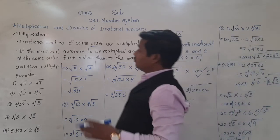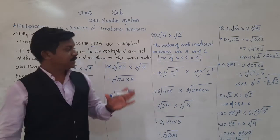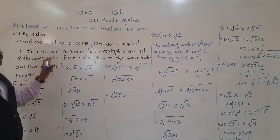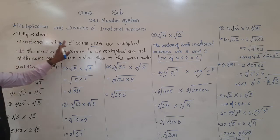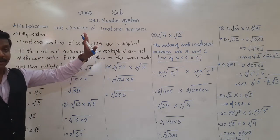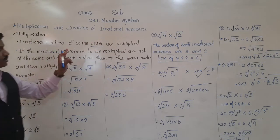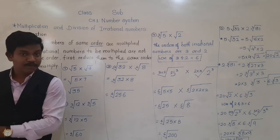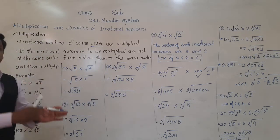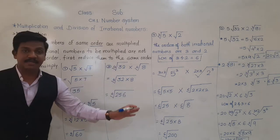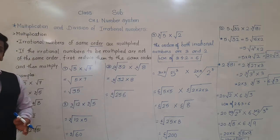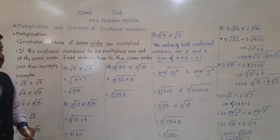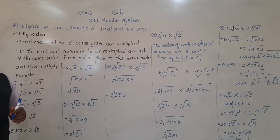So in this way we can multiply two irrational numbers. Two rules you have to keep in mind: irrational numbers of same order are multiplied. And if the irrational numbers to be multiplied are not of same order, then first we need to make their order same by finding the LCM, and then multiply. Pause this video now and write these examples in your notebook. After that we will see the division of irrational numbers.